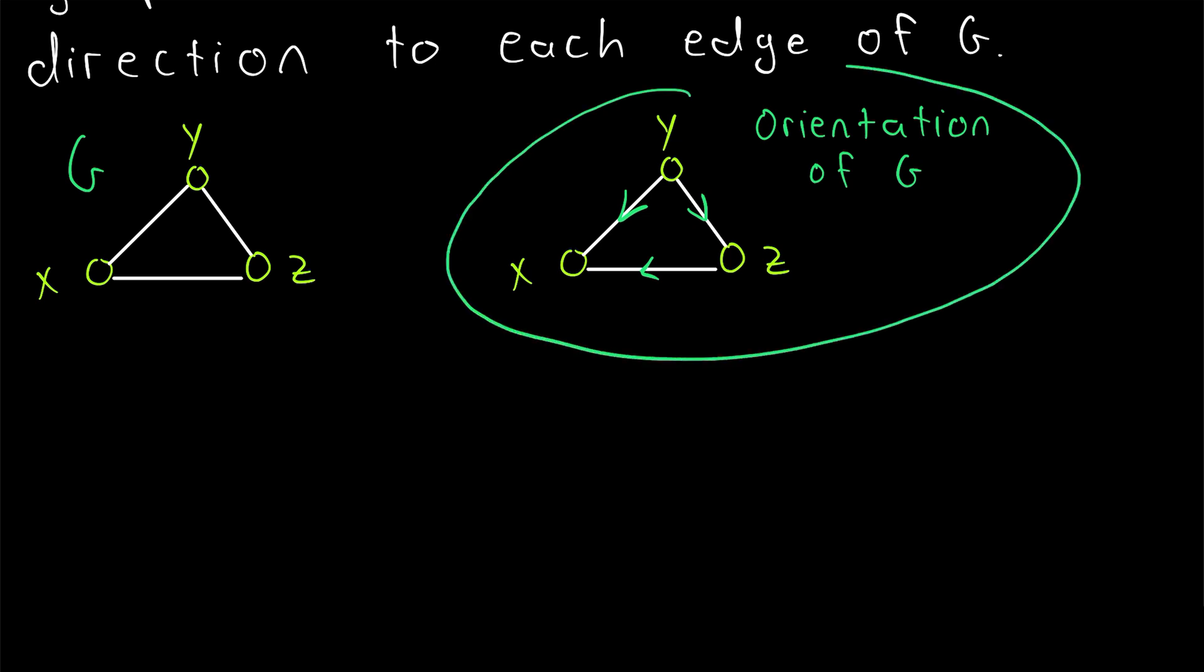And notice that our orientation of G has no symmetric edges. That means that no two vertices are adjacent both ways. For example, Y is adjacent to X, but Y is not adjacent from X because there's no edge joining X to Y.